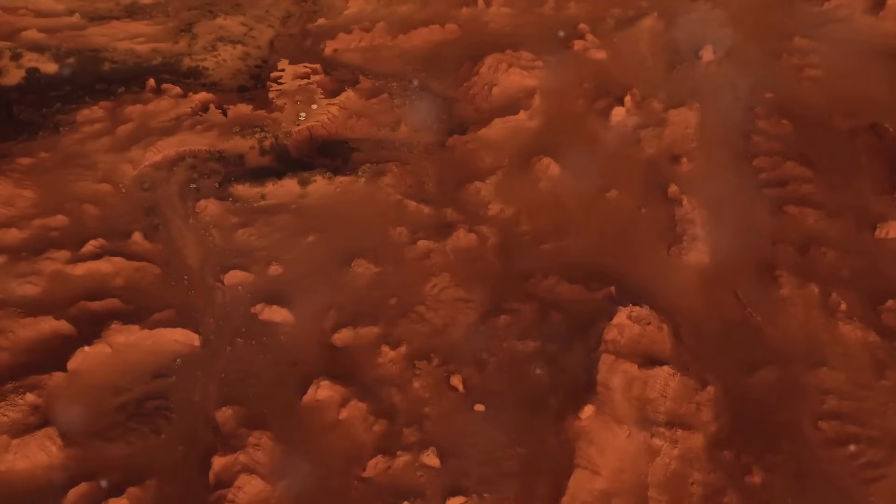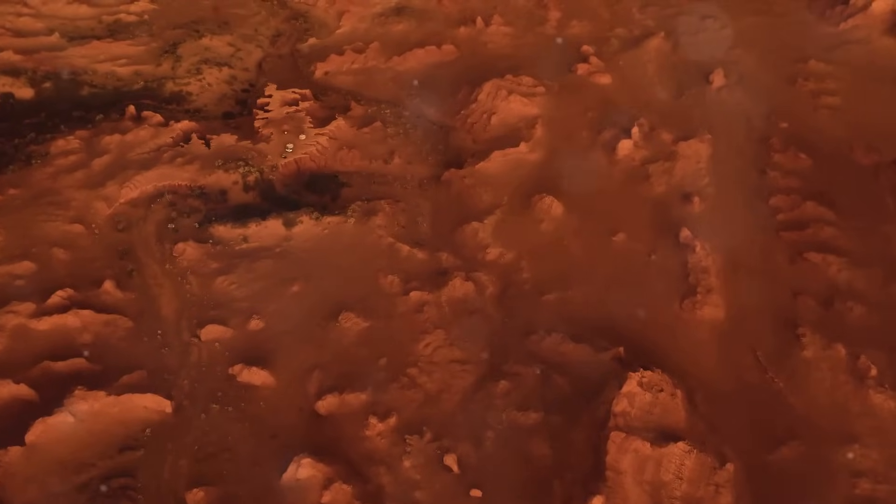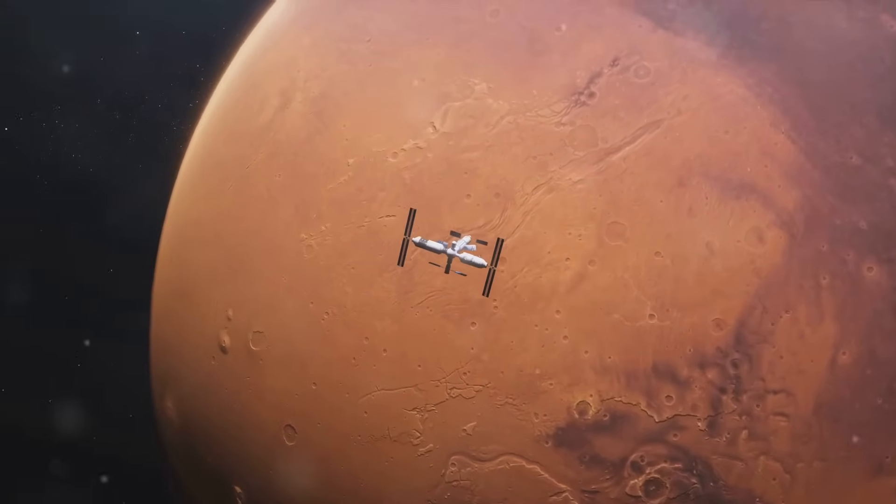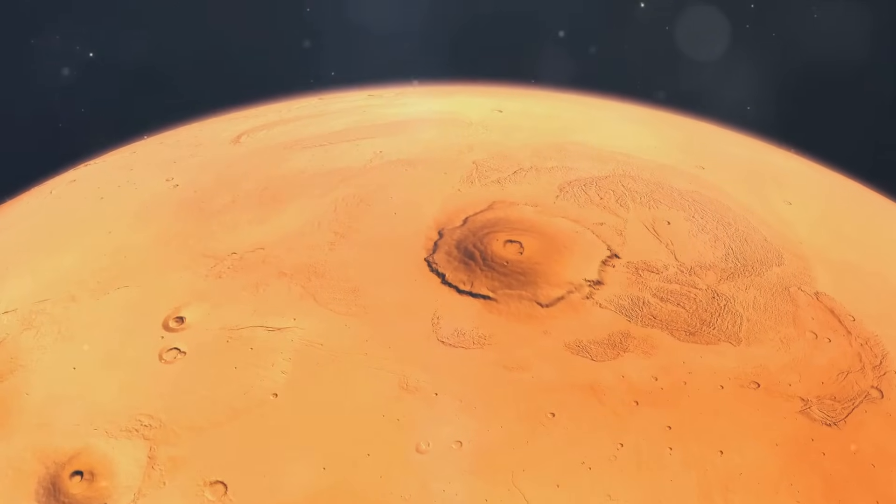Next up is Mars, the fourth planet from the Sun, and the second smallest in our solar system. Mars, often referred to as the red planet, is a world of wonders. Its reddish appearance, which is a result of iron oxide or rust on its surface, makes it stand out in the night sky. But the wonders of Mars don't stop there.